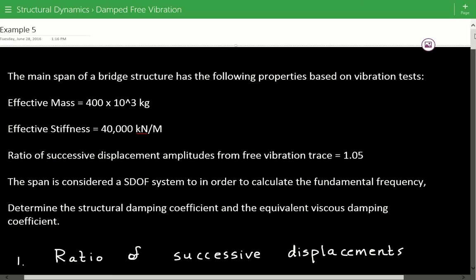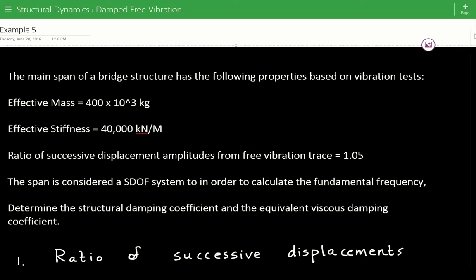Hey everybody, this is example number five for structural dynamics of damped free vibrations. The problem statement that we have is the main span of a bridge structure has the following properties based on vibration tests.